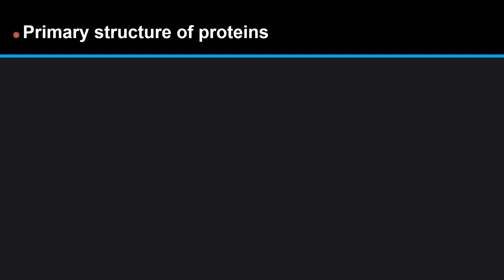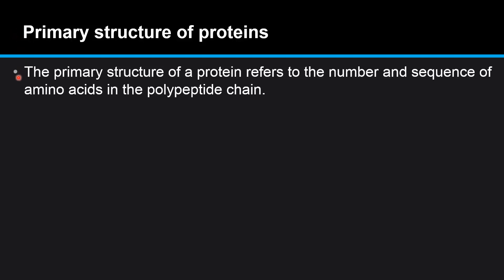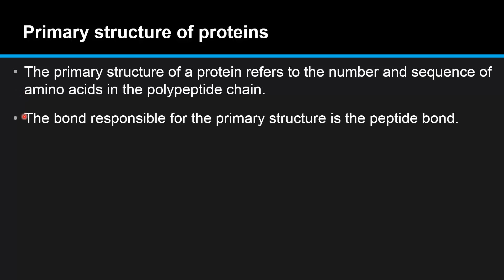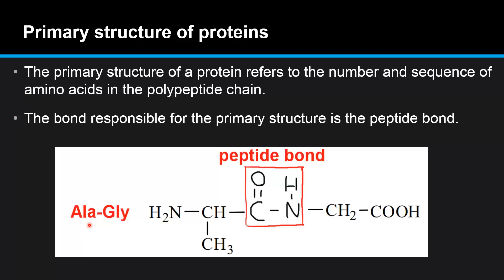In this video we will look at the structure of proteins and we will start with the primary structure. The primary structure of a protein refers to the number and sequence of amino acids in the polypeptide chain. The bond responsible for the primary structure is the peptide bond. Here we have an example of a dipeptide formed from alanine and glycine, and the bond responsible for joining the two amino acids is the peptide bond.